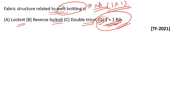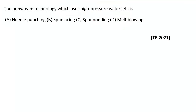Now looking at the next question. This question says the nonwoven technology which uses high pressure water jets is: option A needle punching, option B spun lacing, option C spun bonding, option D melt blowing. Water jets are used in the spun lacing process, so option B is the right answer.